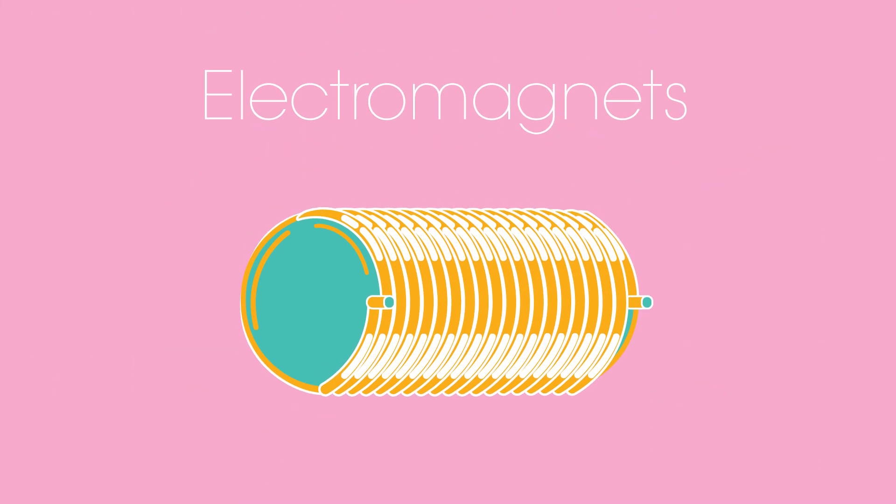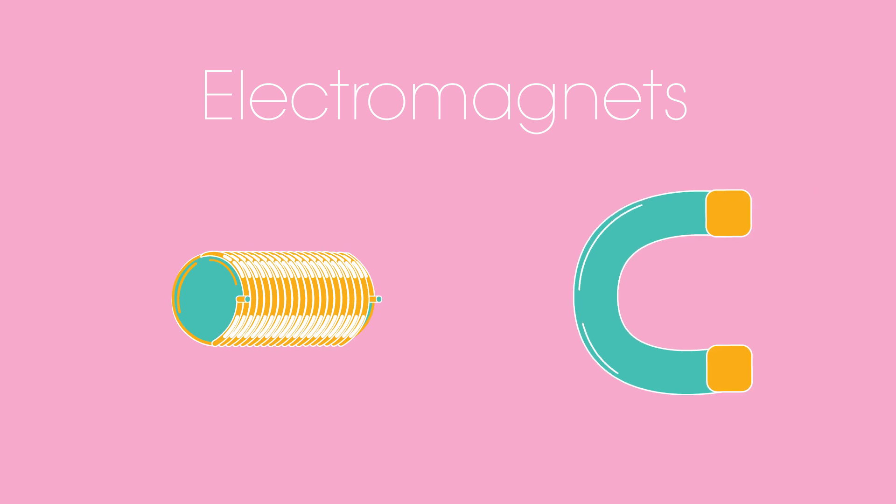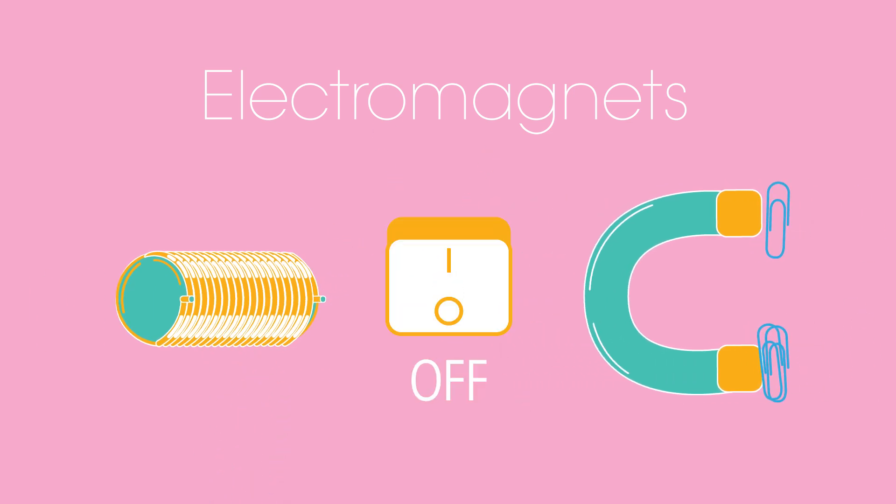Electromagnets are incredibly useful. They can do all the things a normal magnet can do but can also be switched on and off.